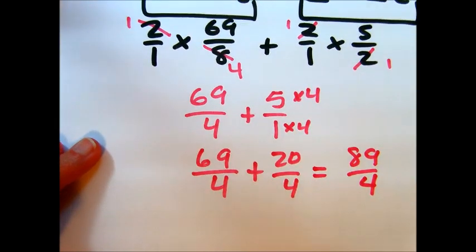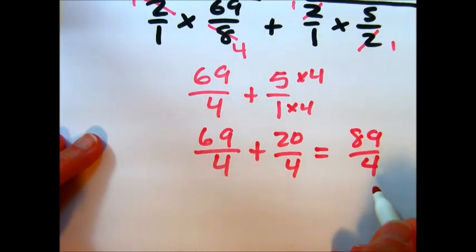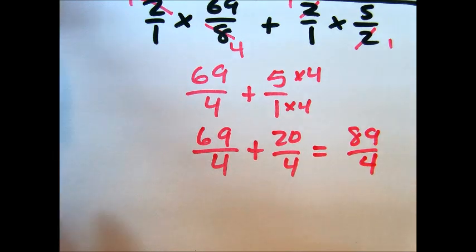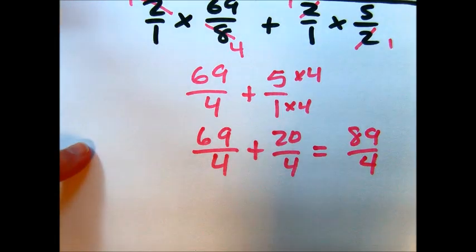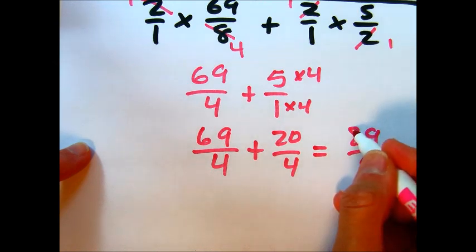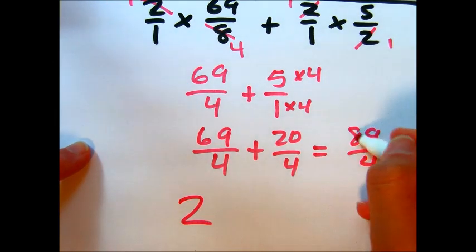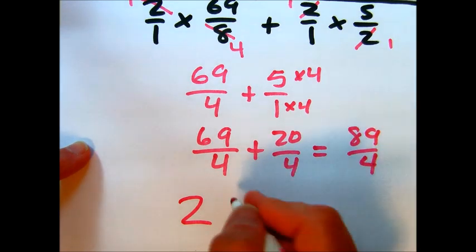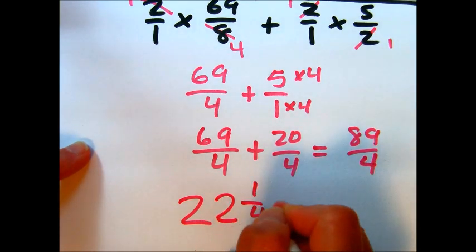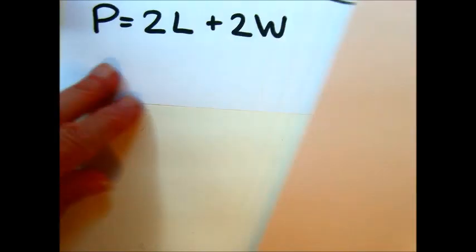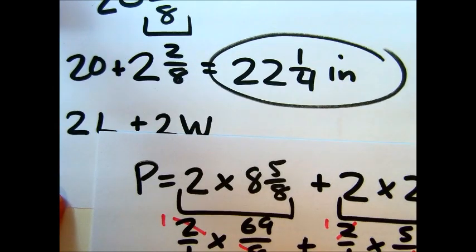And now we've got a big improper fraction. We want to convert that to a mixed number. And so we're really going to be dividing 89 by 4. 4 goes into 8 two times with no leftover. 4 goes into 9 at least two times with 1 leftover. So 22 1/4. Let's see if that matches up with our last example when we did it the other way. And it looks like it does.